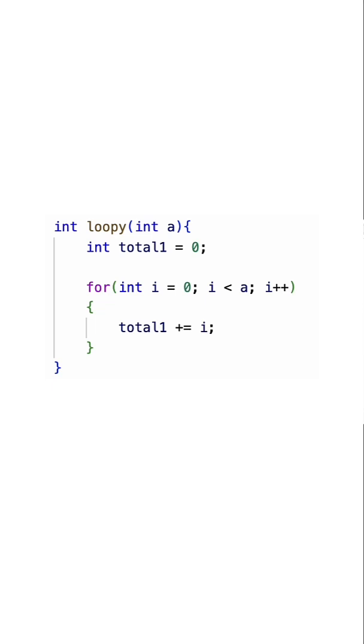As a quick example, let's consider this for loop. Pretty simple, isn't it? Just add the numbers 0 to A together.